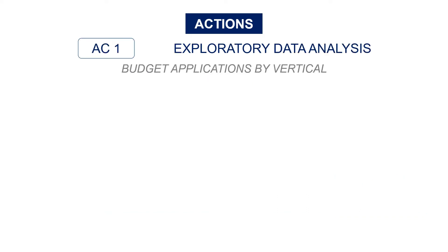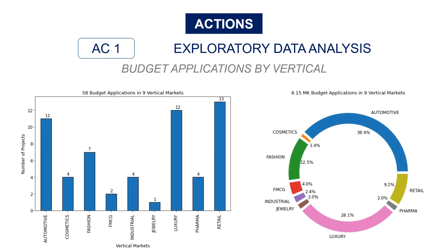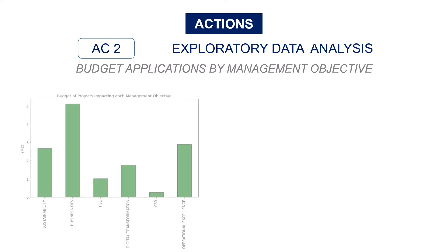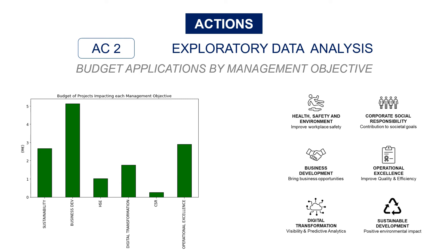Your first action is to perform some exploratory data analysis. You analyze the budget applications by verticals, and what you can see is that 50% of the budget applications in monetary value are coming from automotive and luxury verticals. The second action is to analyze the budget applications by management objective. It is not a surprise to see that most of the budget requests are for business development and operational excellence. So we will have to sacrifice a bit of financial performance if we want to meet the management guidelines, because you will have to refuse some of these projects.